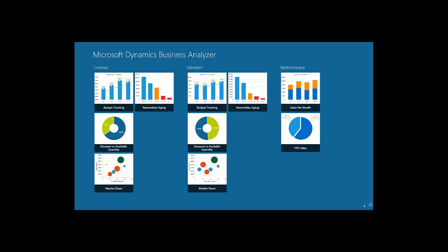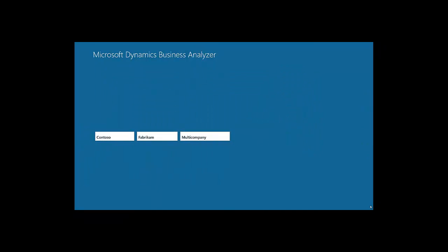There are cases when the number of reports per company is too large to be displayed on one screen. For this reason, we've implemented a zoom feature. You can click the minus button in the lower right corner, or zoom out on the tablet device.